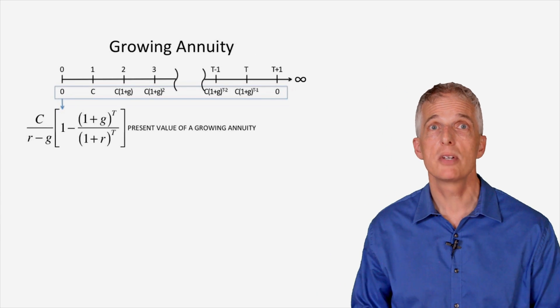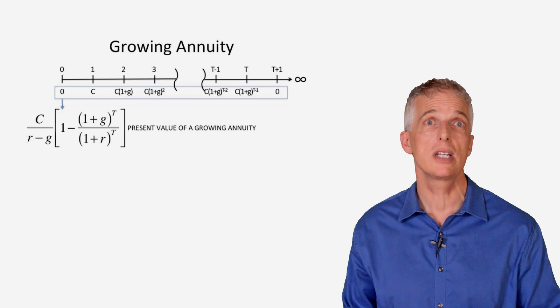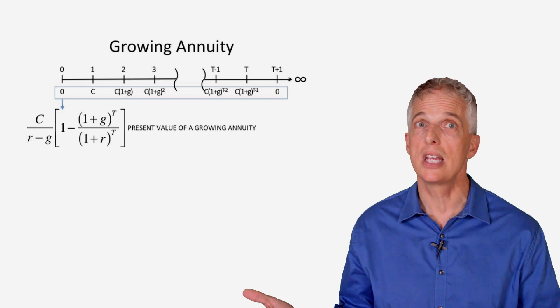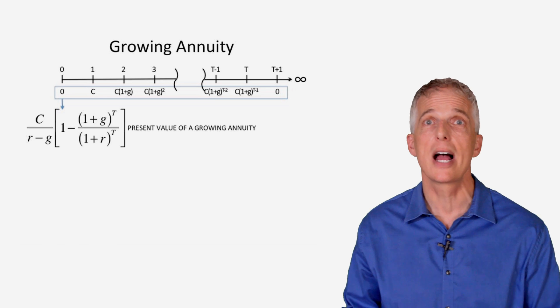A growing annuity provides a promised cash flow, C, one period from today, but then begins to grow at a growth rate G in the second period through the last period, T.